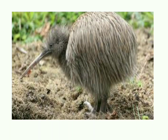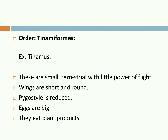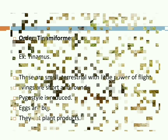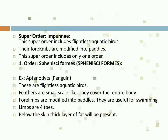Dinornithiformes, also known as Moas, are extinct birds that could reach nearly 12 feet in height. They lived about 300 years back and were killed largely for their delicious meat by humans. Aepyornithiformes were large, elephant-sized flightless birds with small wings that lived about 2,000 years back; their eggs were also very large. Tinamiformes — Rhea — is an extinct bird of South Africa and South America.